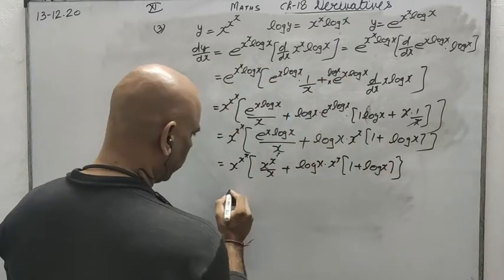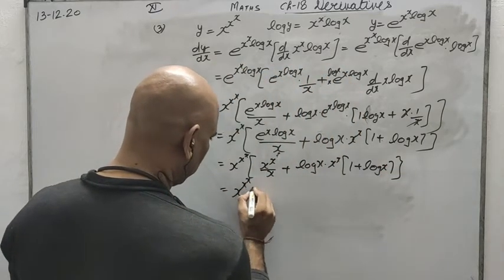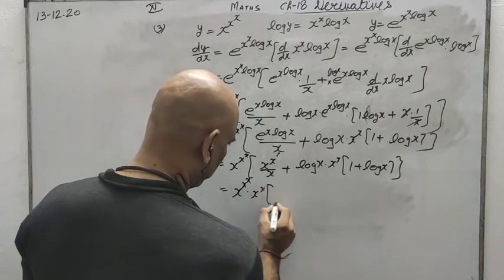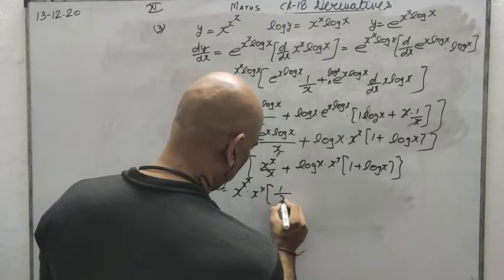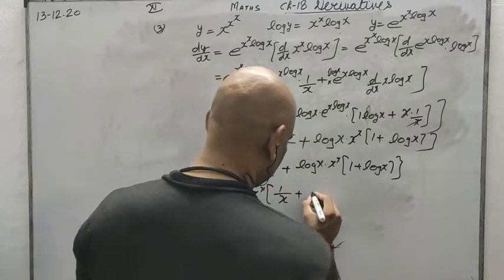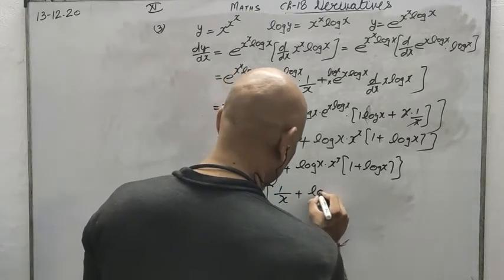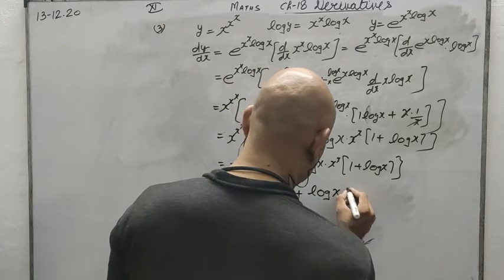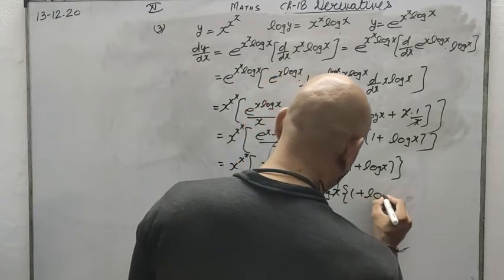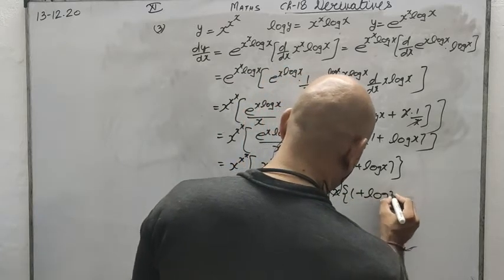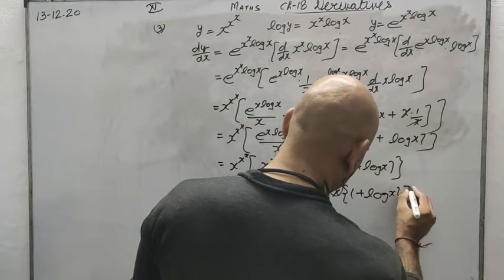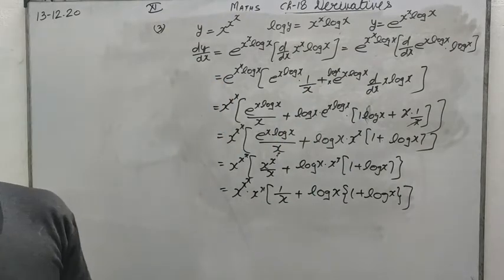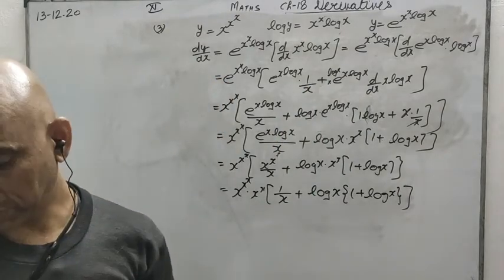Taking x to the power x as common, the final answer is: x to the power (x to the power x) times x to the power x times [1 upon x plus log x times (1 plus log x)].